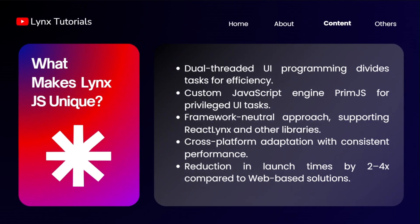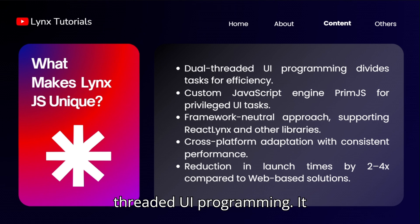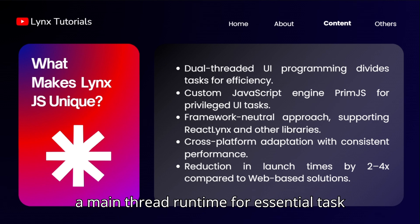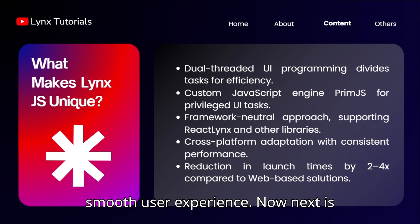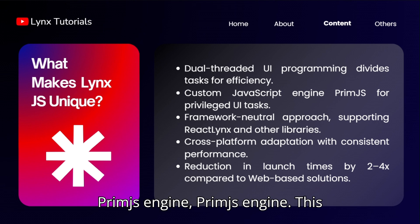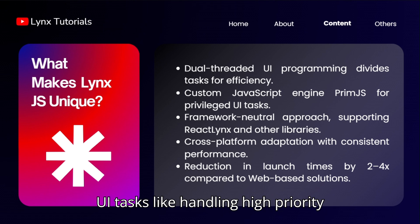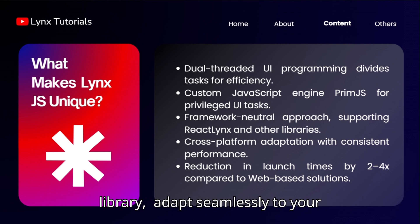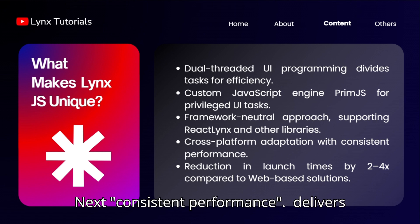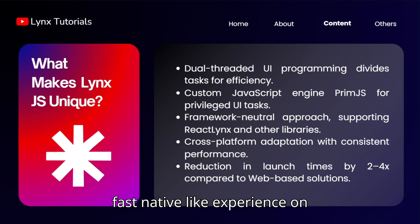So what makes links.js unique? What sets links.js apart is its architectural advancement: dual-threaded UI programming. It intelligently splits scripting into a main thread runtime for essential tasks and a background runtime for secondary scripting, ensuring low workload and a smooth user experience. Next is the Primps.js engine — this custom JavaScript engine is optimized for UI tasks like handling high-priority events and initial rendering. Primps.js is not fully custom built; it's built upon QuickJS. And framework neutrality: whether you are using React links or another library, links adapts seamlessly to your project needs. Links also delivers fast, native-like experiences on all supported platforms, making it an excellent choice for cross-platform development.